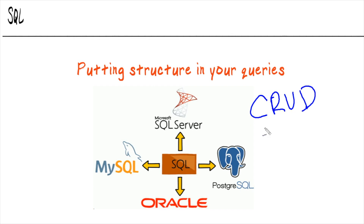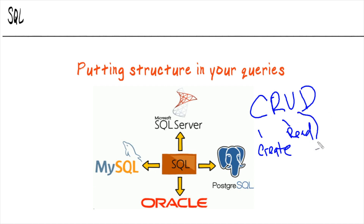The C is for Create — we can create data, create databases and tables to store it. R is for Read — this is extracting data out; we can build the queries we want to pull data out so that we can ultimately visualize and analyze our data. U is for Update — we can update our data when things need to be changed. And D is for Delete. SQL gives us the ability to handle CRUD operations with extreme ease.